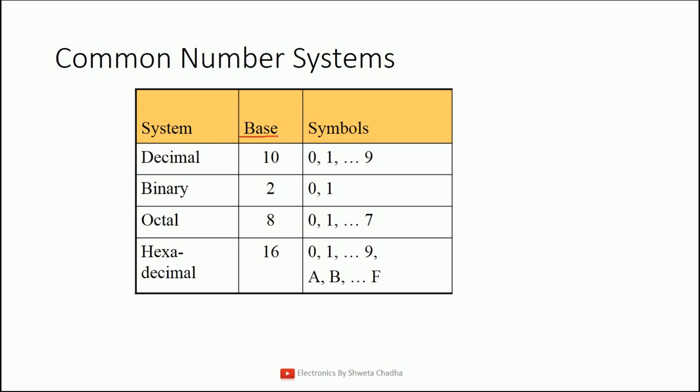Now what is base? Base means how many symbols are allowed in a particular number system. First of all, the decimal number system. The decimal number system is the basic number system that we are using since our childhood. That means 0 to 9, all the symbols are allowed. Hence, after counting from 0 to 9, total 10 values are allowed. Hence, the base is 10.